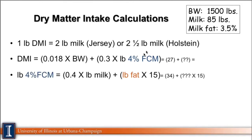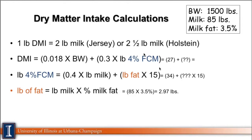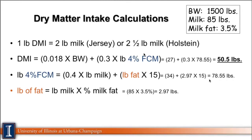The 4% fat-corrected milk uses another formula: multiply the amount of milk the cow is producing by one factor and the amount of fat by another. The amount of fat is simply milk times percent fat, so this cow is producing 2.97 pounds of fat per day. Therefore, her 4% fat-corrected milk is 78.55 pounds, and she should be eating around 50.5 pounds of dry matter per day — that's what the NRC gives us.